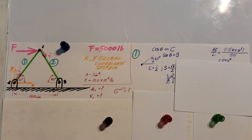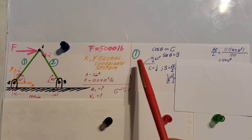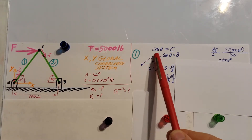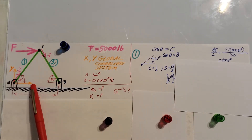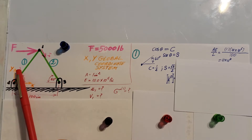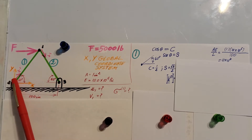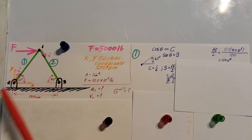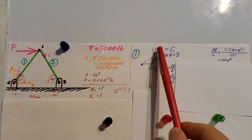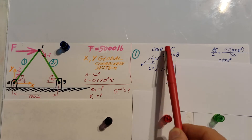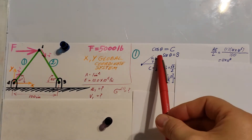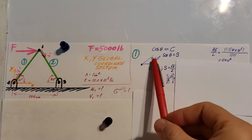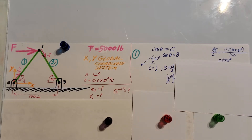For element 1, the angle between the global coordinate x and my local x-prime is 60 degrees. We mark cosine theta as c and sine theta as s for simplicity. Cosine of 60 degrees is one-half, and sine of 60 degrees is square root of 3 over 2.